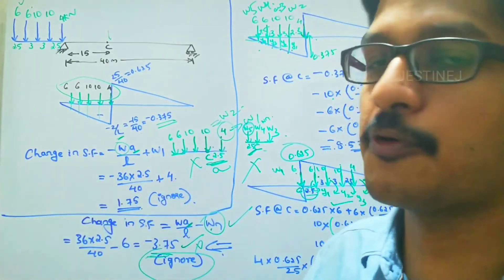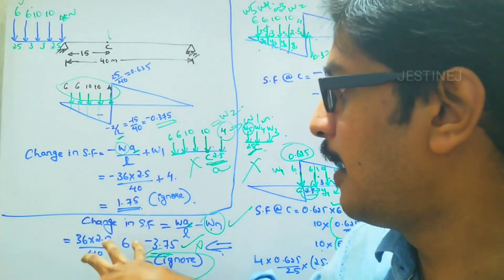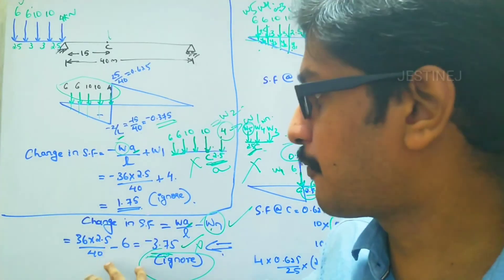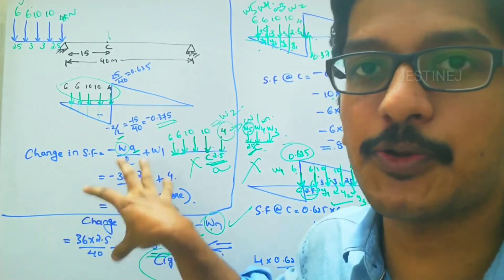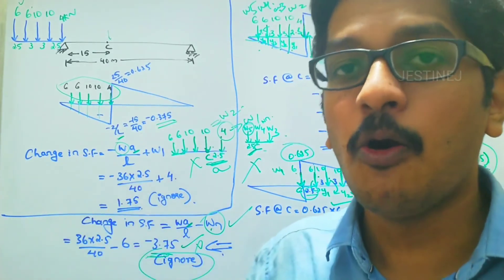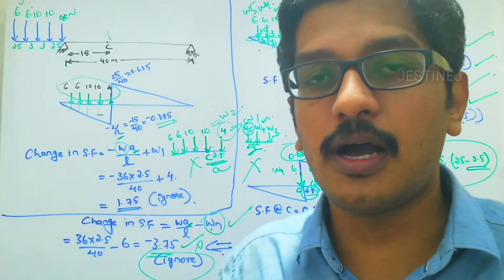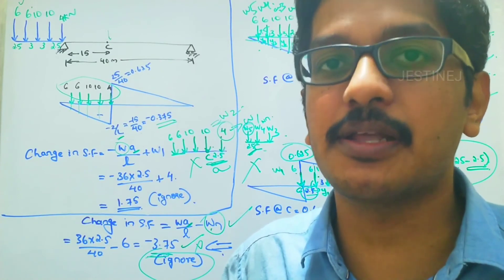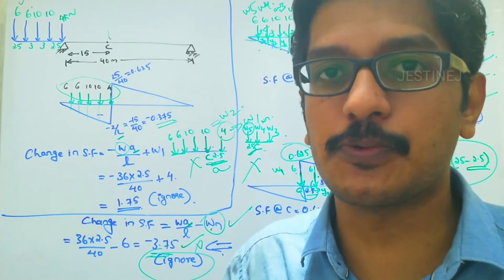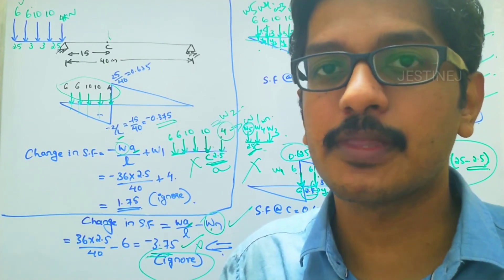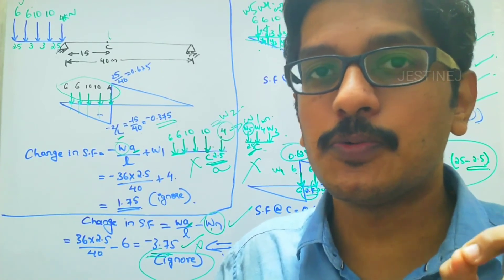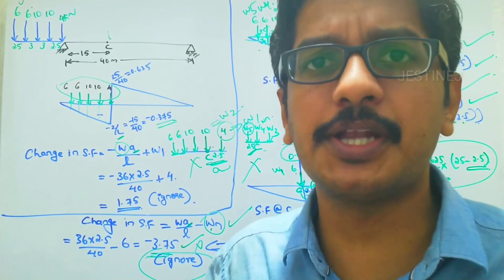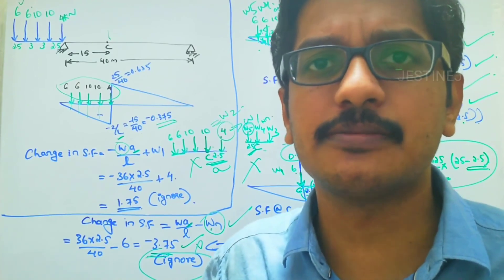For finding the maximum negative shear force, follow the first arrangement, and for the maximum positive shear force, follow the second condition. Alternatively, you can use the trial and error method. With this, we wind up today's session. Thank you.